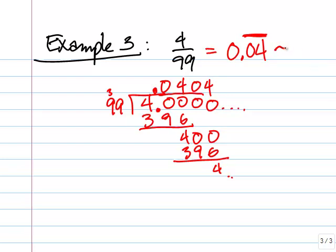Or if we want to approximate this, we can just say this is approximately equal to 0.04, rounded off to the hundredths place. So that is how you convert a fraction to a decimal.